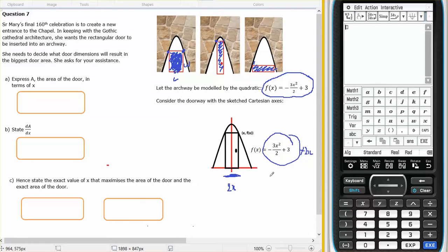Which will be 2X times minus 3X squared, divided by 2, plus 3, close bracket.